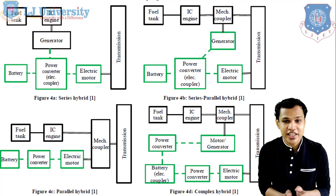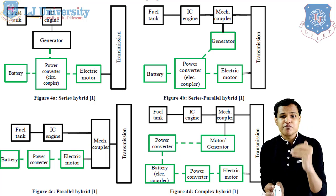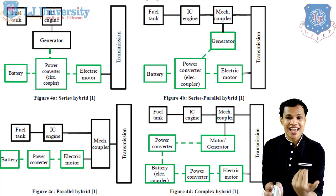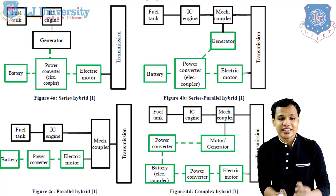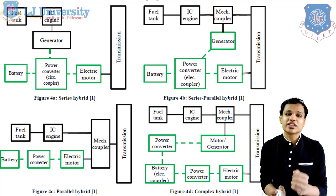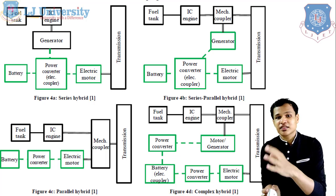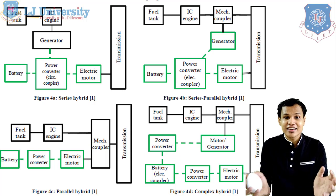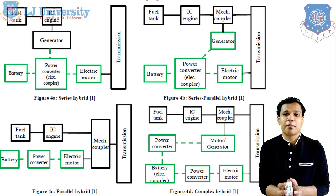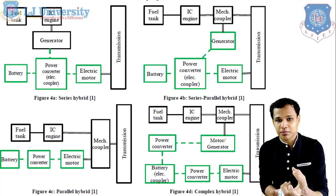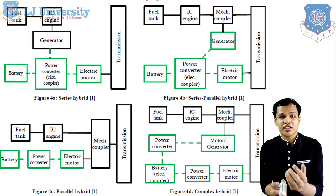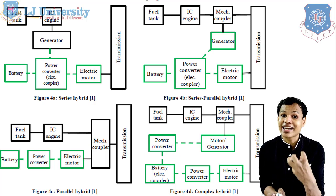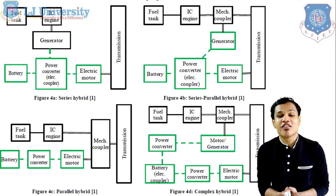The second configuration below the series hybrid system is the parallel hybrid system, that is figure 4C at the bottom left side. In the parallel connection, you can see that the mechanical transmission is connected with the help of a coupler, and that coupler is connected individually with the IC engine as well as with our electric motor. So they are supplying the power individually — you can see that they are connected in parallel. Either the vehicle can be run with the help of the IC engine or with the help of the electric motor.